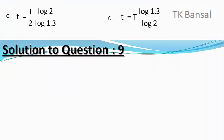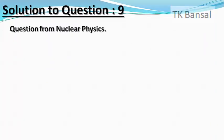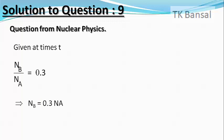Obviously, this is a simple question from nuclear physics. Given at time t, NB divided by NA equals 0.3, which implies NB equals 0.3 times NA.